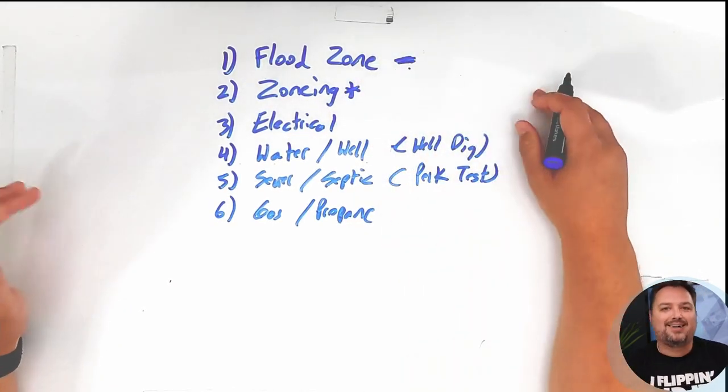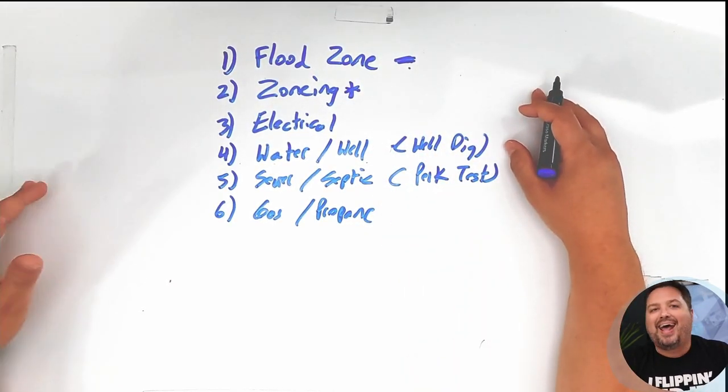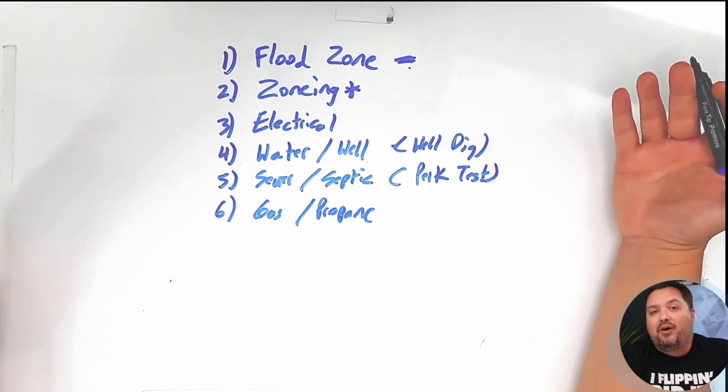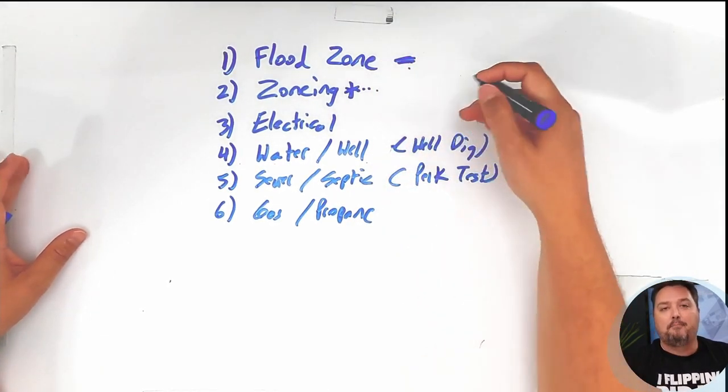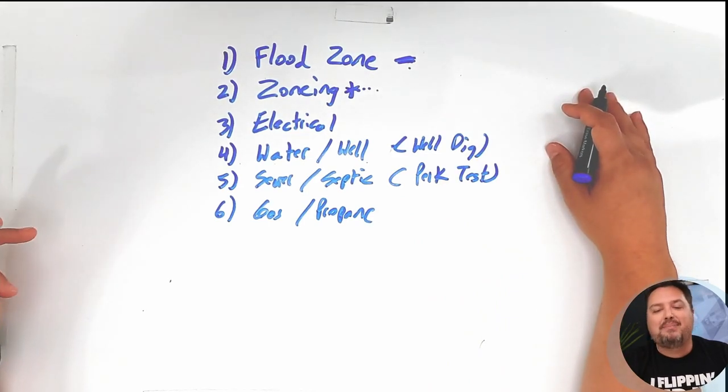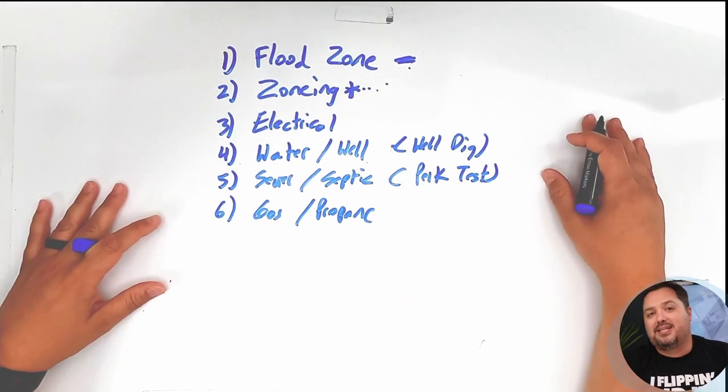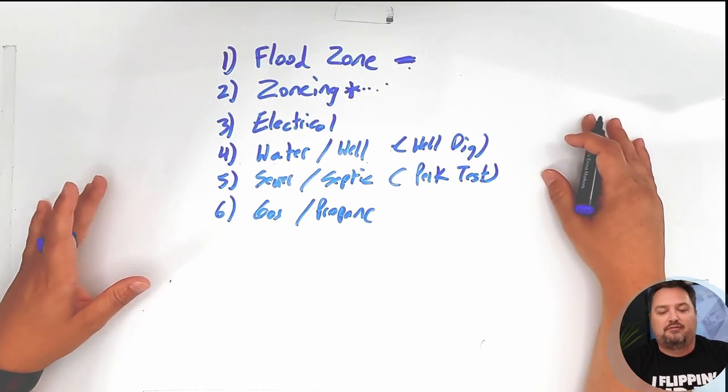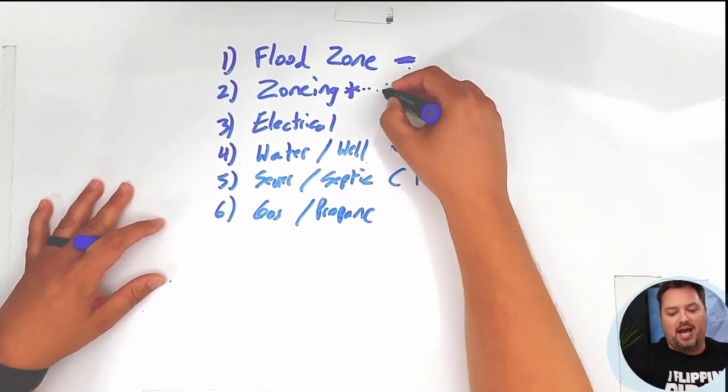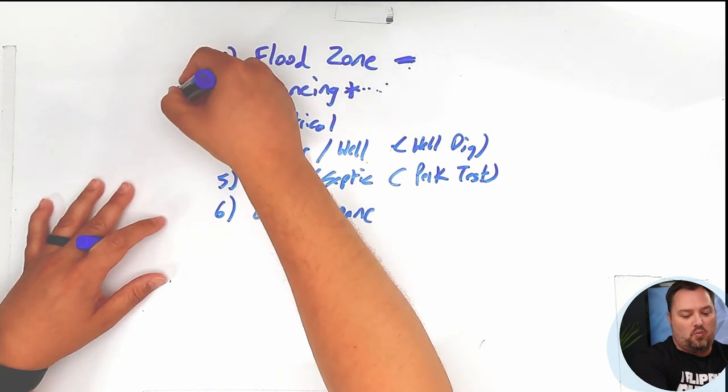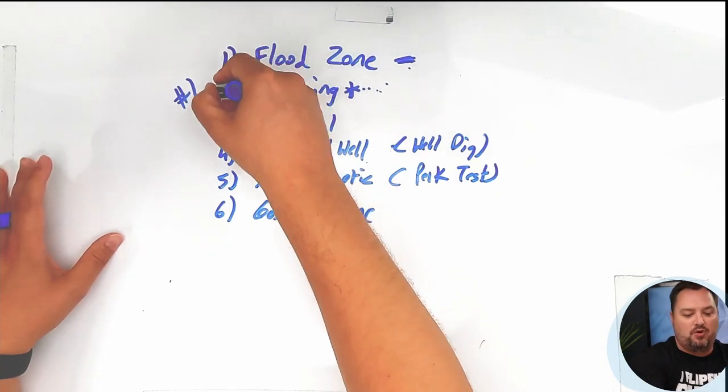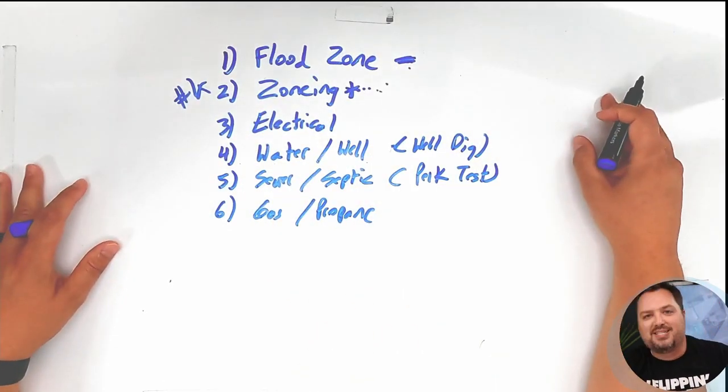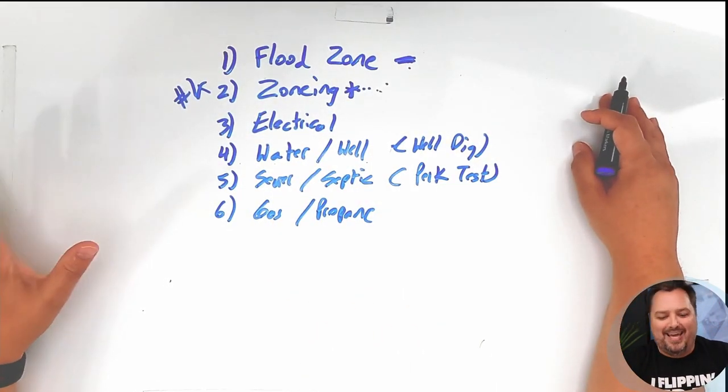The second one is zoning. You've got to call the zoning department in the municipality where the property is located and ask them simply, can I put a mobile home there? Because they may have restrictions where mobile homes are not allowed, and that's going to kill your ability to buy this piece of land for your mobile home right away. Actually, I would probably do this one number one, because if the zoning is not there, nothing else matters.